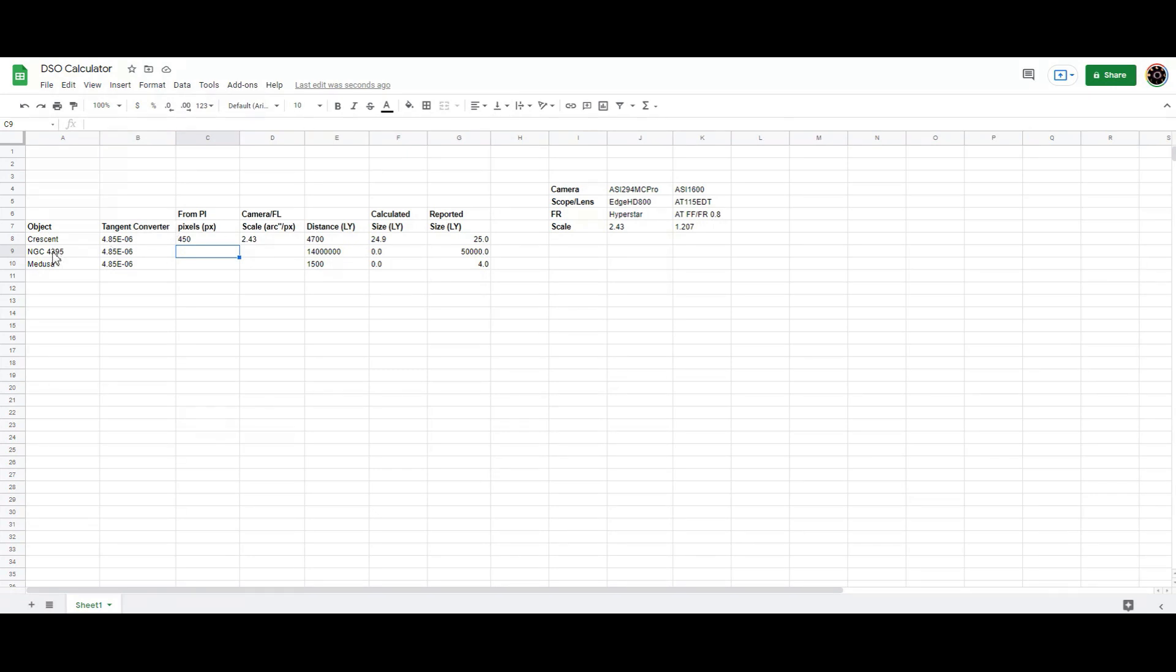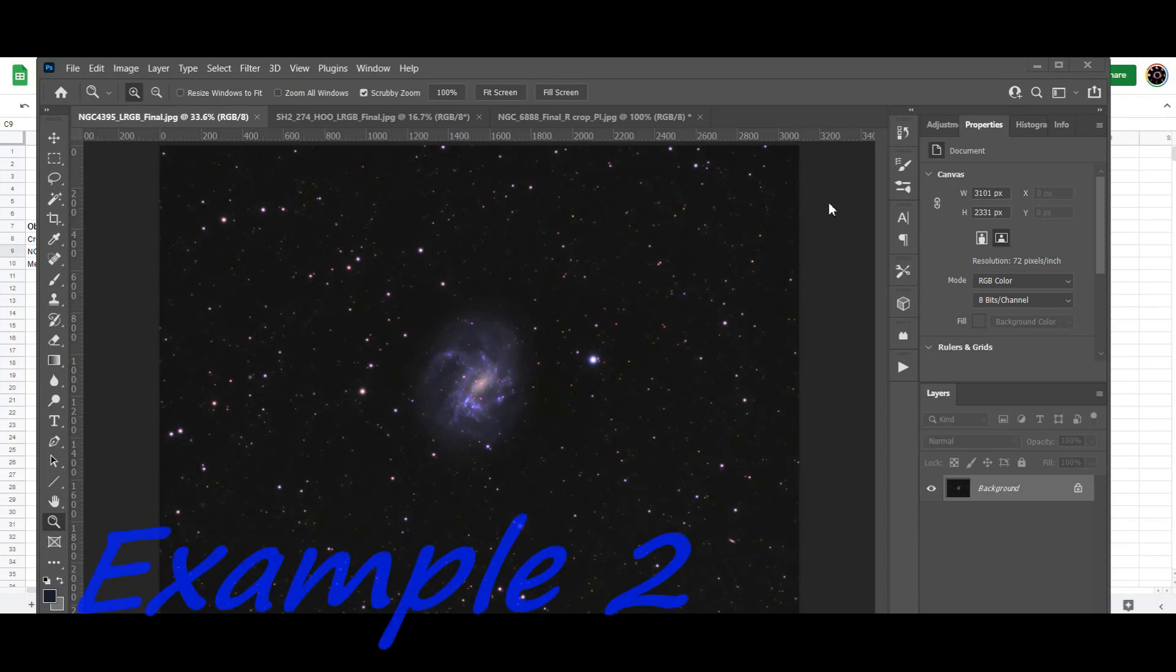Let's do another one. Let's do this NGC 4395. Now that one I used with my ASI 1600 and AstroTac 115 with a focal reducer of 0.8. And that camera scale was 1.207. Okay, and the reported size is supposed to be 50,000 light years. So let's go take a look at that.